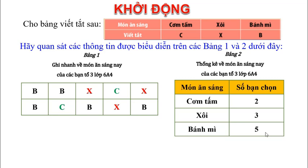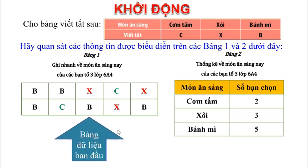Thông qua ví dụ, ta thấy khi thống kê về món ăn sáng nay của các bạn tổ 3 lớp 6A4, đầu tiên ta lập bảng viết tắt, sau đó thu thập lựa chọn của các bạn trong tổ rồi điền vào bảng 1. Đếm số lượng từng loại, ta có được bảng 2. Bảng 1, thông tin được biểu diễn dưới dạng danh sách các chữ cái viết tắt, được gọi là bảng dữ liệu ban đầu.